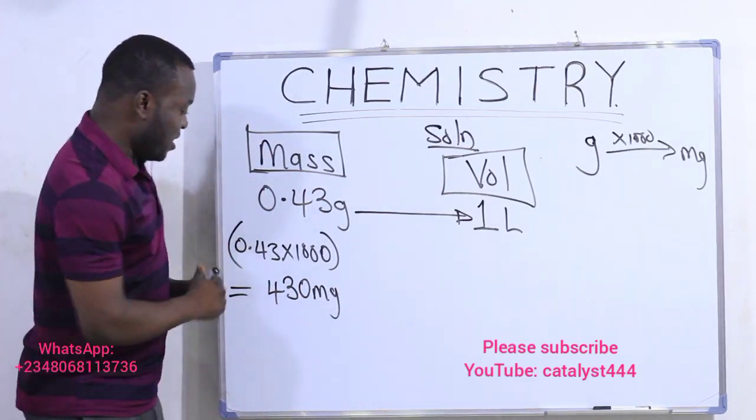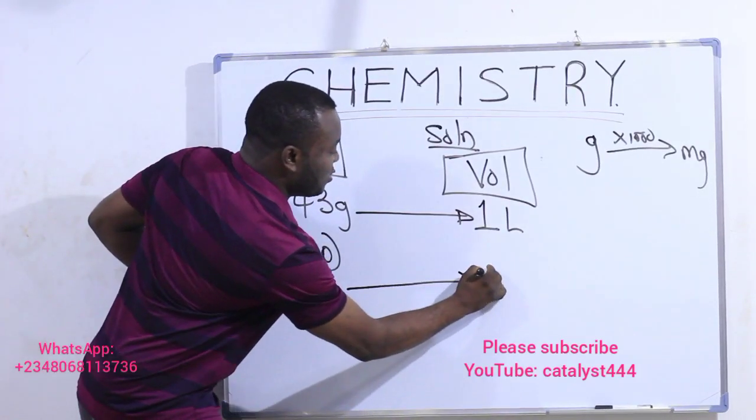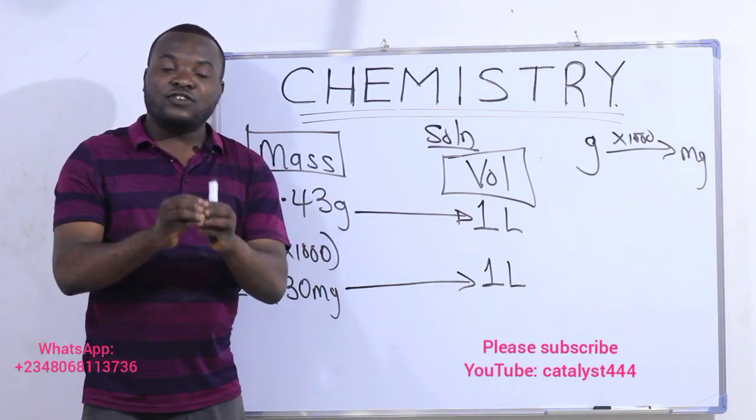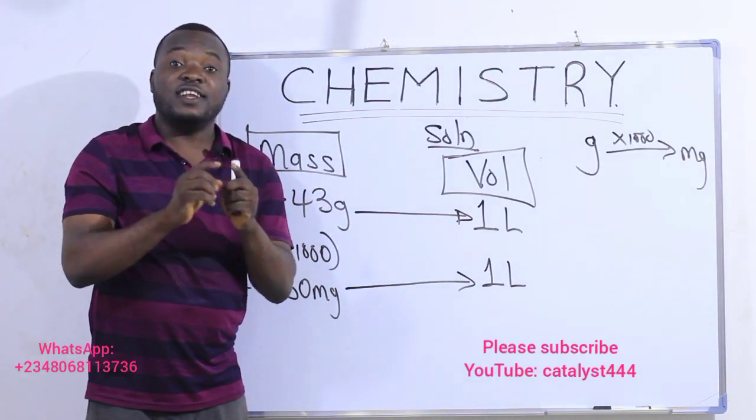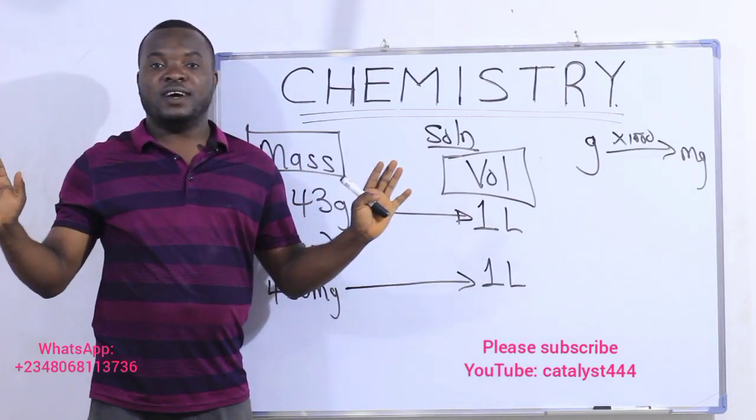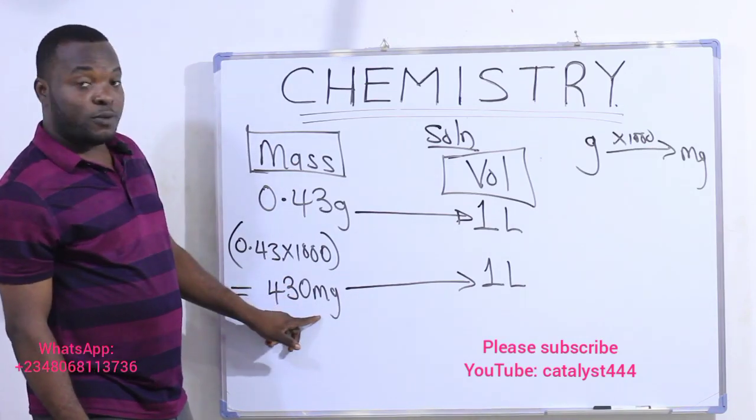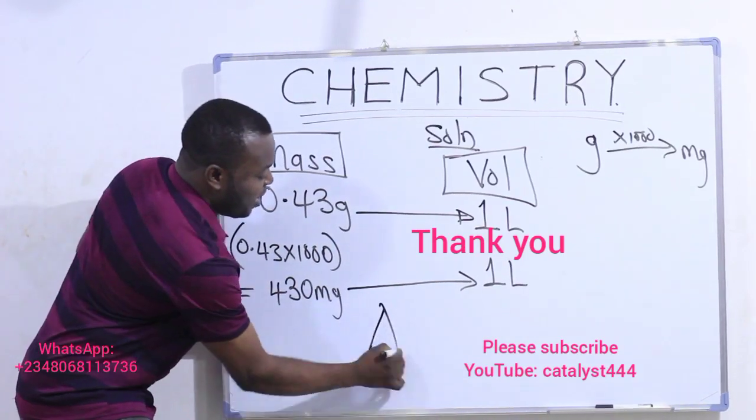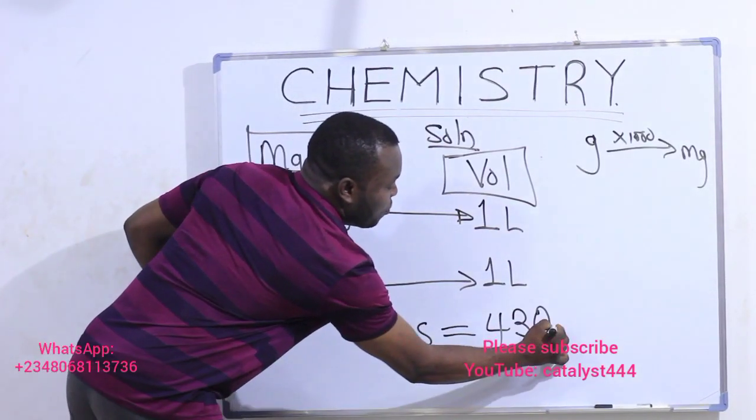So this simply means that 430 milligrams of the iron is contained in one liter of the solution. And remember, as soon as you find the number of milligrams of the substance contained in one liter, that number of milligrams in one liter is your ppm. And that is the answer. Now that we can see 430 milligrams of the substance contained in one liter, it simply means that our answer is equal to 430 ppm.